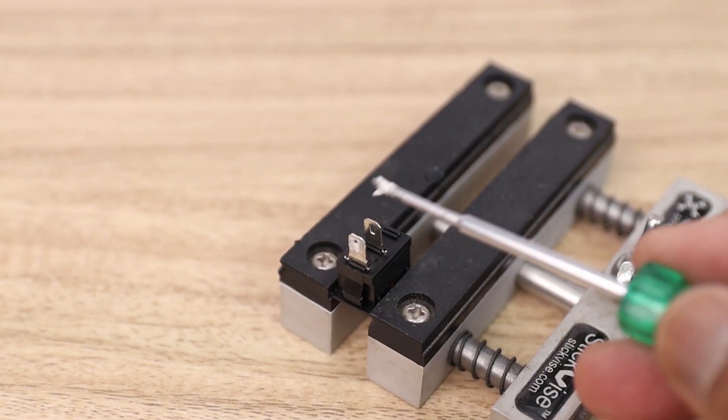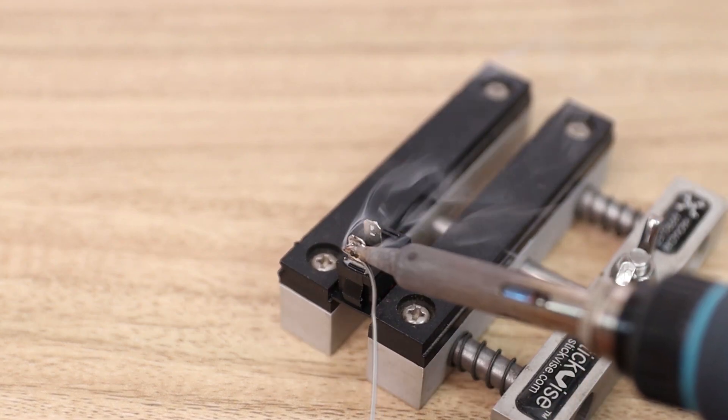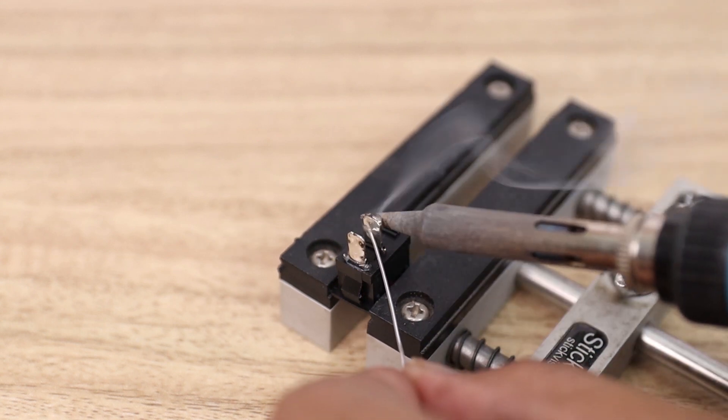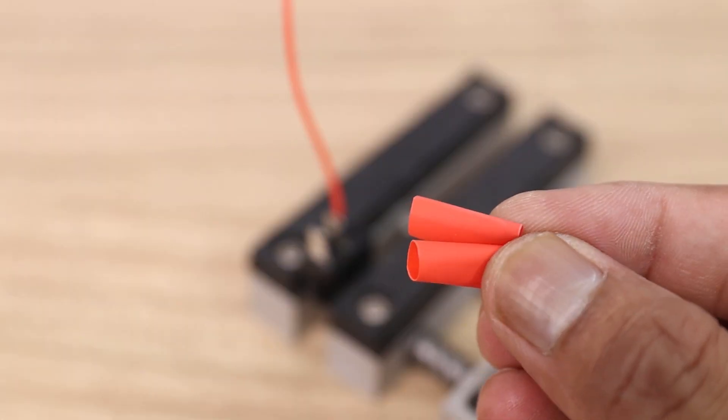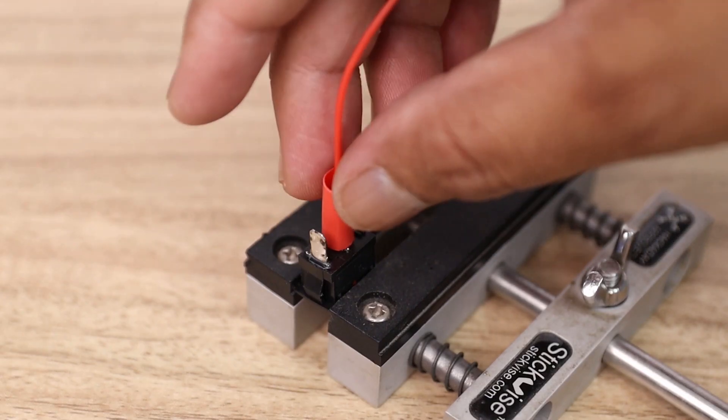In the next step, we have to prepare the rocker switch. First apply small amount of flux to the terminal, then solder the terminal wires. To insulate the soldering joint, I have applied heat shrink tube.